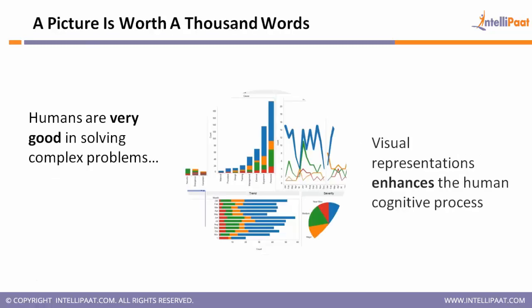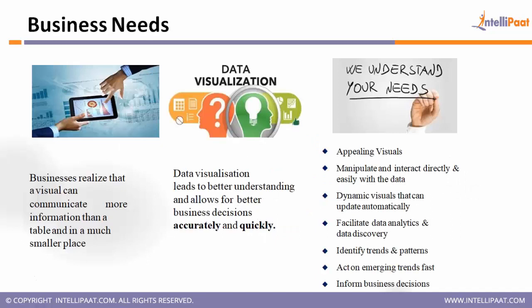Human brains work faster when we see a picture. Humans are very good at solving complex problems, and visual representation enhances the human cognitive process — when you see a picture you are able to interpret a lot of information rather than looking through millions of records. Business persons also realize that a visual can communicate more information than a table. Data visualization leads to better understanding and allows for more accurate decision-making, helping to quickly draw conclusions from huge volumes of records.